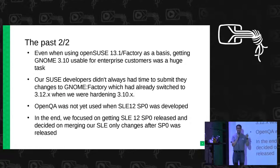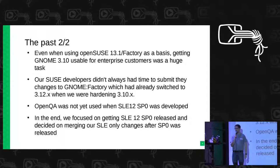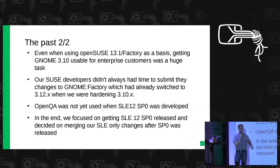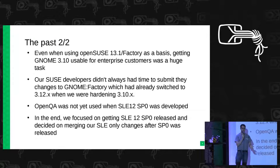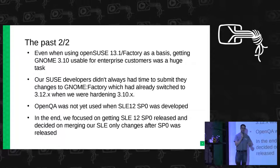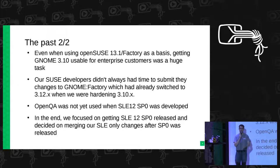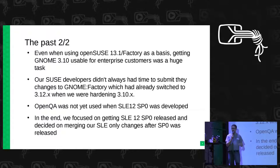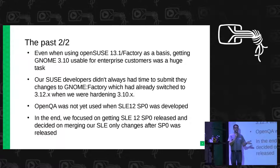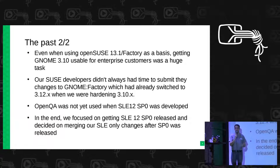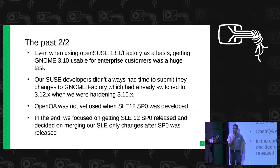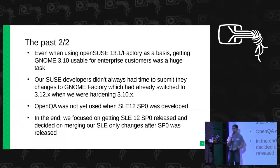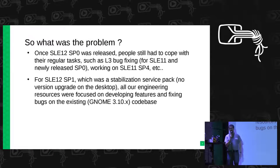We also didn't have OpenQA when we worked on SLE 12 SP0 — it was still in its infancy and starting to be used for what we now know as Tumbleweed, which at the time was Geeko's Tumbleweed. So we focused on making SLE 12 SP0 rock solid, and we said we would take care of upstreaming the work later. Okay, so that was the past.